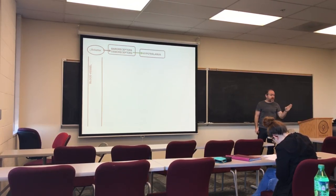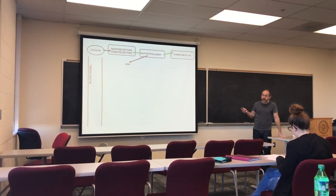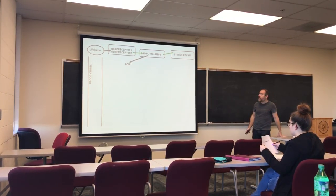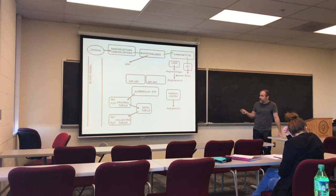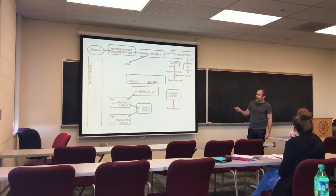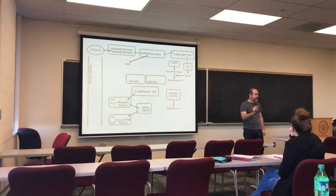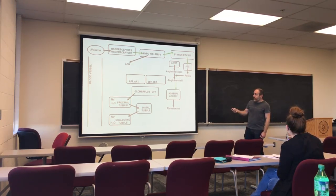When sensory receptors send this information to the central nervous system, a series of responses is activated. The sympathetic nervous system stimulates the renin-angiotensin system: the liver secretes angiotensinogen, which needs renin to be transformed into angiotensin 2, the active compound. Renin is secreted by the juxtaglomerular complex in the kidney, next to the proximal convoluted tubules.